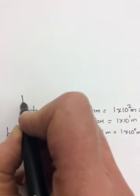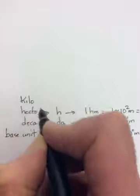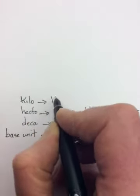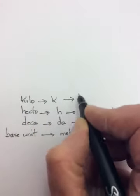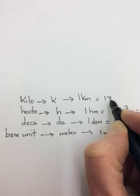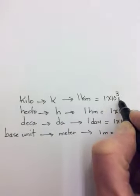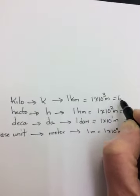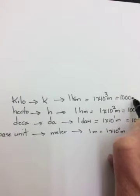Now the next one up you do know. It's kilo. And kilo is a small k. And 1 kilometer is equal to 1 times 10 to the 3 meters, in other words, 1,000 meters.